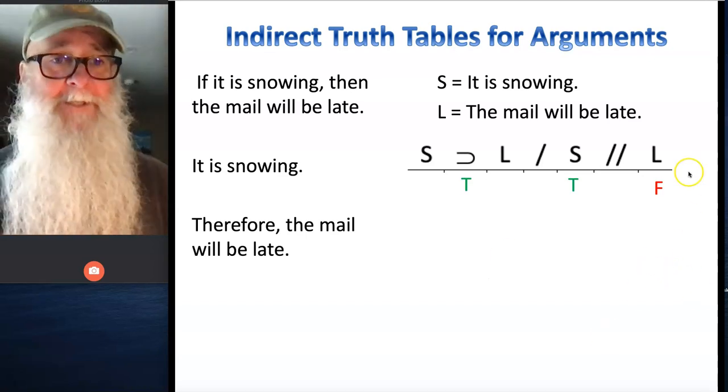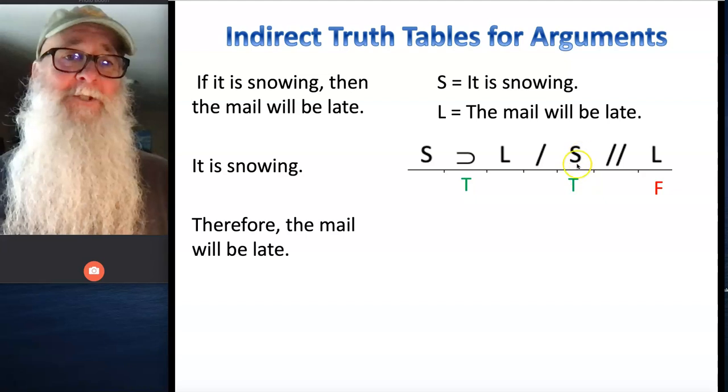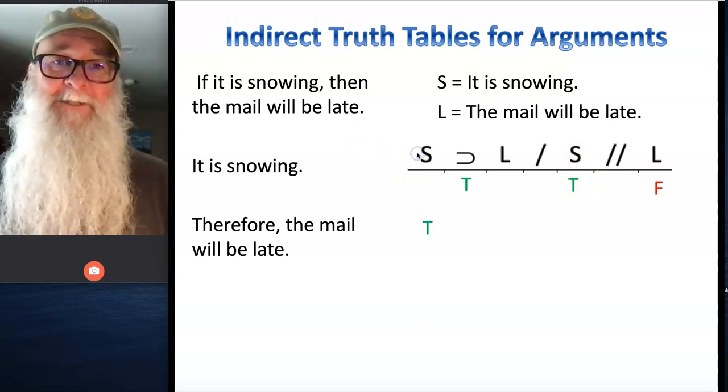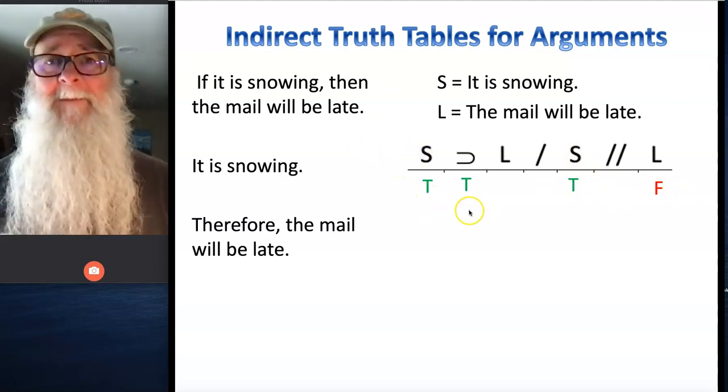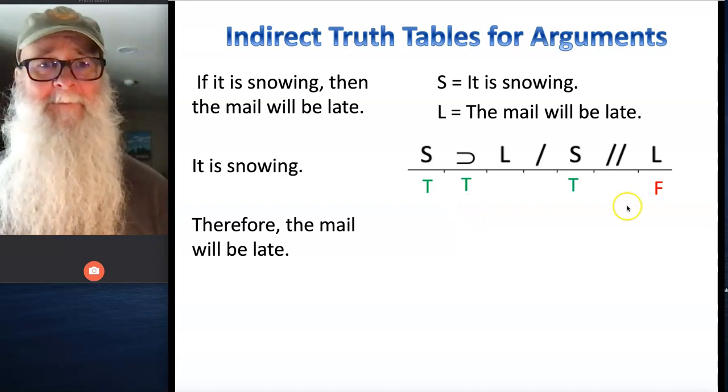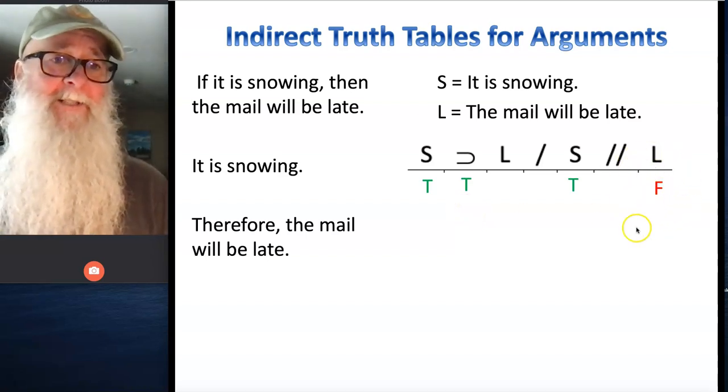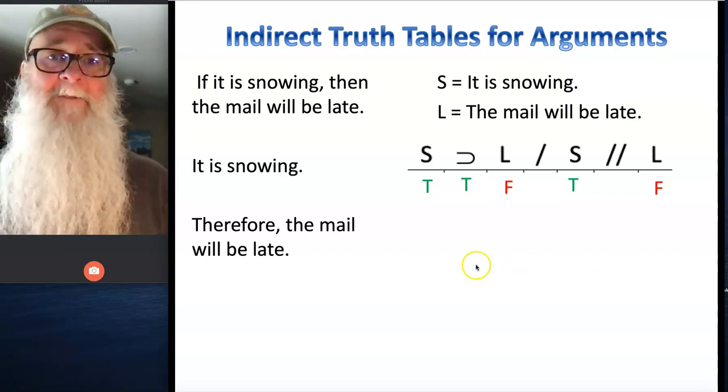All right, so we're going to deduce logically necessary truth values. I know that if S is true here, it's got to also be true here because this is all one moment in time, and S can't be both true and false at the same time. So then the same goes for L. If L's false here in the conclusion, it's got to be false there.